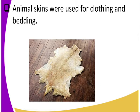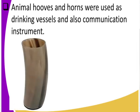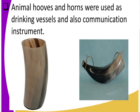Now apart from the skins, look at the horns and the hooves. Animal hooves and horns were used as drinking vessels and also in communication. Remember, these people didn't have the cups or glasses you're using now — they used hooves as drinking vessels. There is a vessel that has been made out of a hoof. They could also blow horns as a means of communicating information — that was a traditional form of communication.